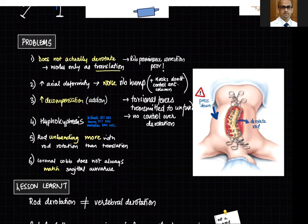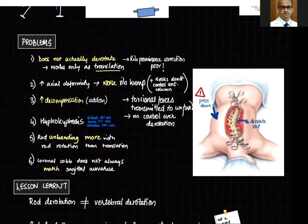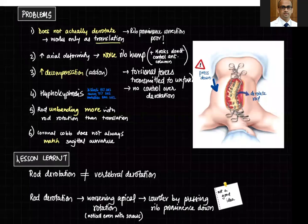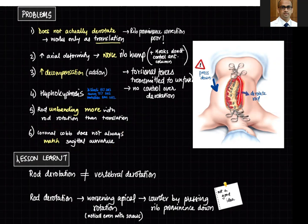Decompensation was also partly caused by the rod derotation manoeuvre, where uncontrolled torsional forces were transmitted to the unfused area of the spine. CD instrumentation had no control over derotation because unlike pedicle screws, hooks only hold the posterior elements. Furthermore, the rod derotation manoeuvre unbends the rod much more than a simple translational manoeuvre, and the coronal Cobb did not always match the sagittal curvature.